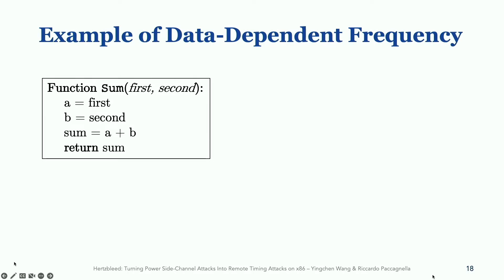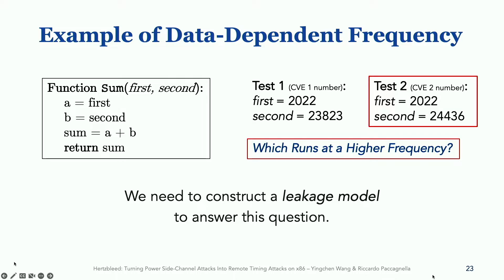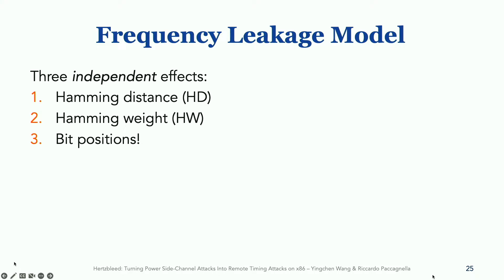Let's look at an even more concrete example. Suppose we have this function that computes the sum of two arguments, first and second. And suppose that we call this function with two different sets of inputs, test one and test two. We can ask the question, which ones of these two tests will cause the function and the processor to run at a higher frequency? And we can think about this question for a second. The answer is test two. But why is it the case that test two runs at a higher frequency? To answer this question in our paper, we constructed a leakage model, which describes the dependency between data, CPU power consumption, and CPU frequency on modern Intel processors. And we found that there are three independent effects that affect this dependency. And now we will explain briefly each of these three effects.